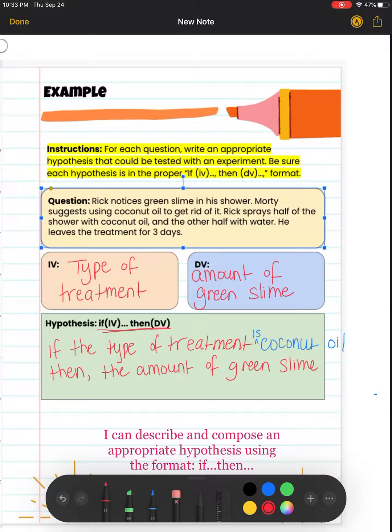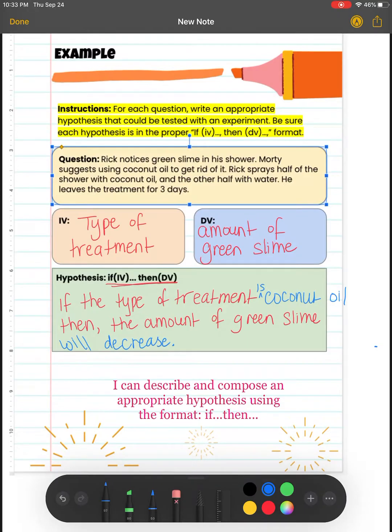Again, we have to be specific. So we got to use words such as increase, decrease, stay the same. We have to use words that describe a relationship, very specific relationships. So using coconut oil, I think is going to decrease the amount of green slime. And we can even go a step further and say the amount of green slime will decrease more than just using water. So we can be as specific as possible when writing our hypothesis.